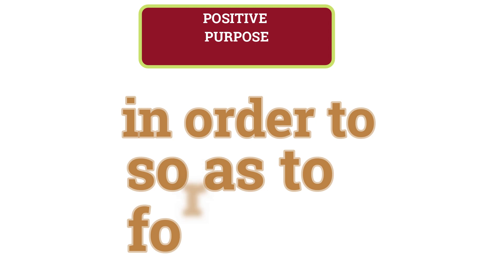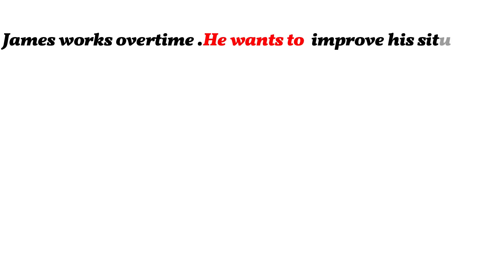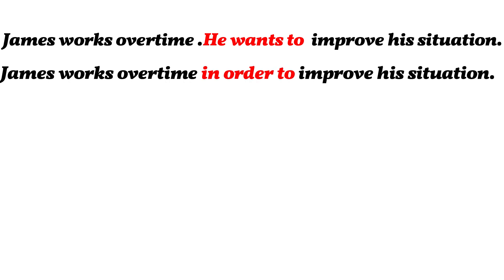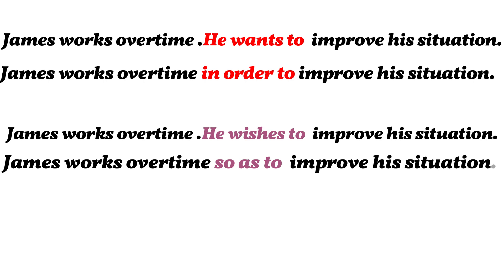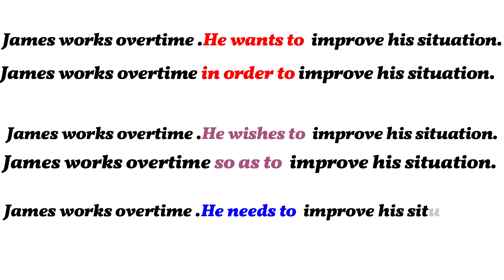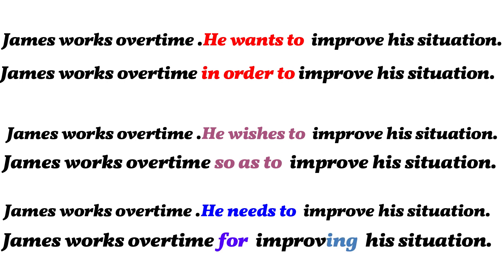For positive purpose, we use 'in order to', 'so as to', or 'for'. Look at this example: James works overtime — he wants to improve his situation. We can join and express purpose by saying: 'James works overtime so as to improve his situation.' The same example, this time with 'he needs to': 'James works overtime in order to improve his situation.'